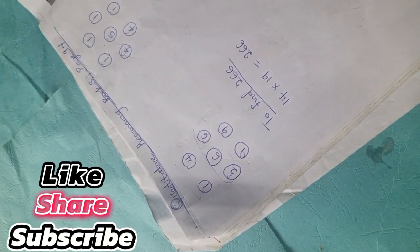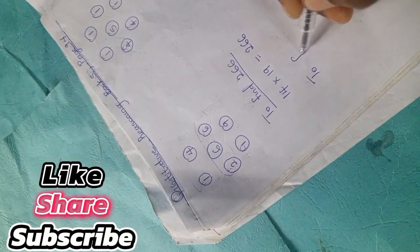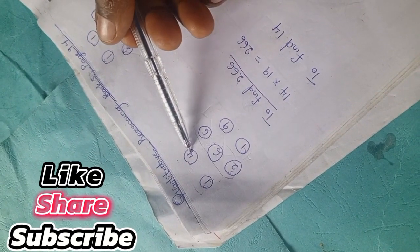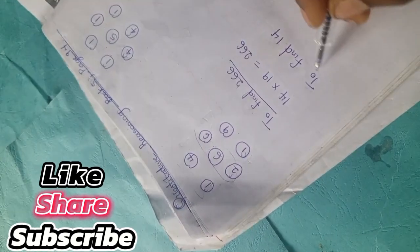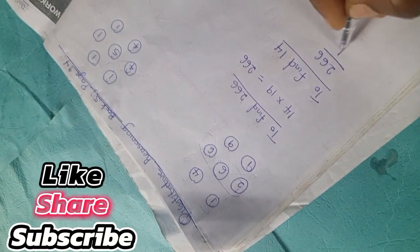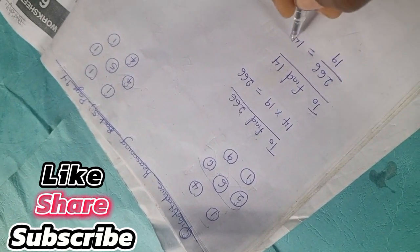So to find 14, we have 266 divided by 19 and we have 14. So irrespective of the number you're looking for, whether four, you simply replace.